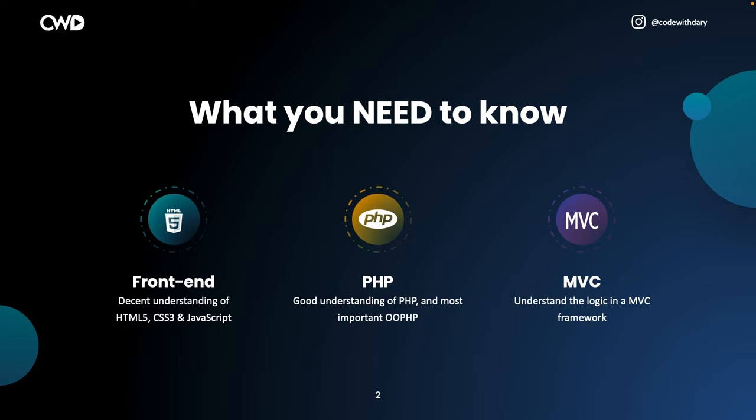The most important skill you need is obviously PHP, and specifically object-oriented programming. We will be using terms like extends, classes, interfaces, objects, scope, and accessibility — I will cover them quickly but on a very basic level. Besides that, you need a good understanding of MVC. You don't need to build an MVC structure with your eyes closed, but you should know the concepts: a controller handles logic, sends data back to the view, and a model interacts with the database.